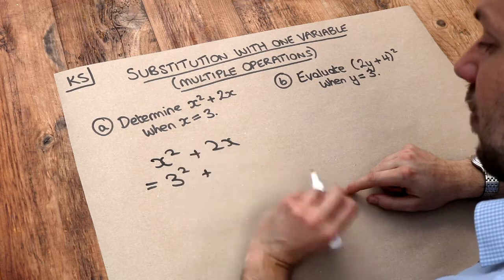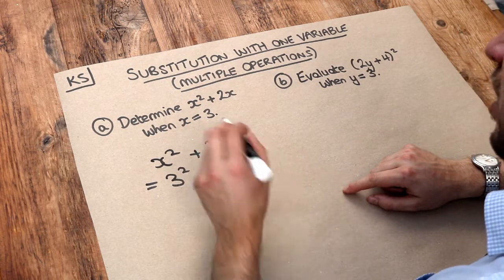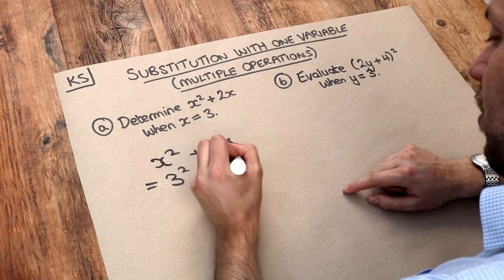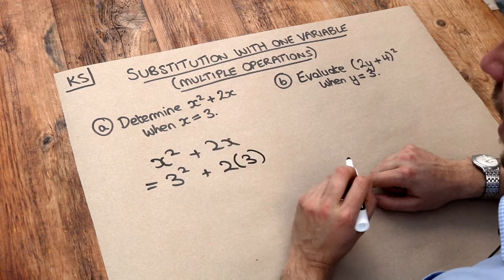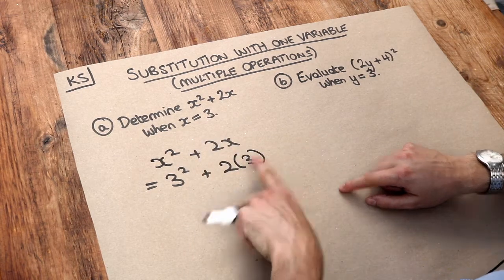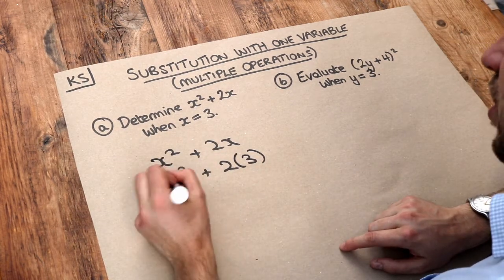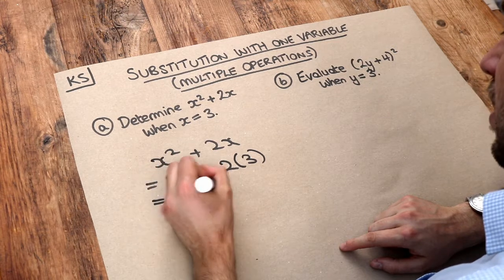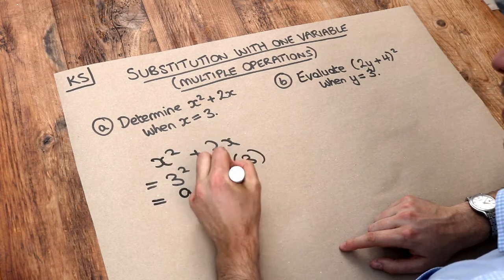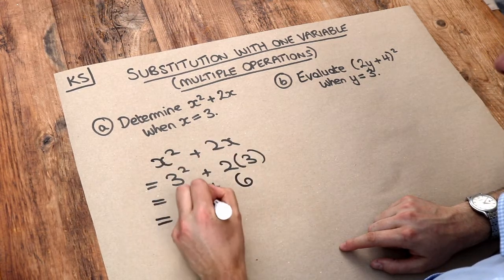Now you could write 2 times 3 with a times symbol, but I prefer to avoid using the times symbol. I instead put the 3 there in a bracket, and that's the same as saying 2 times 3 because these things are next to each other so we multiply them together. So that's 3 squared which is 3 times 3 which is 9. 2 times 3 is 6, and 9 plus 6 is 15.